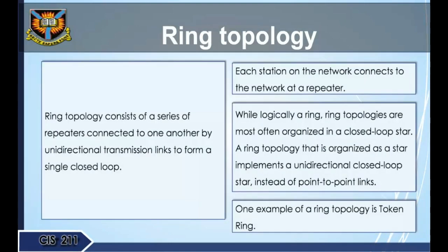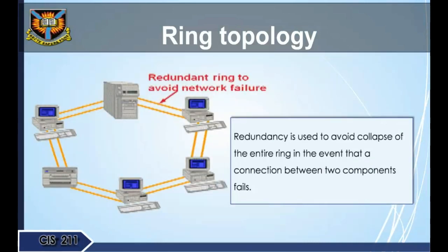Ring topology consists of a series of repeaters connected to one another by unidirectional transmission links, forming a single closed loop. Each station on the network connects to the network at a repeater. While logically a ring, ring topologies are most often organized in a closed-loop star. One example of a ring topology is Token Ring. Redundancy is used to avoid collapse of the entire ring in the event that a connection between two components fails.